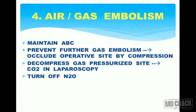First and foremost, maintain ABC — airway, breathing, and circulation. To prevent further gas embolism, occlude the operative side by compression. For example, in orthopedic, neurological, or polytrauma surgery where surface area is large, close the surgical site with your palms or with a bandage. Depress the gas-pressurized side if any — for example, if CO2 is used during laparoscopy, deflate the pneumoperitoneum as quickly as possible.